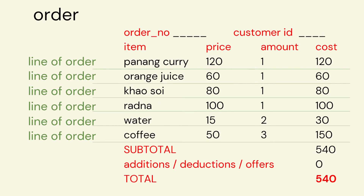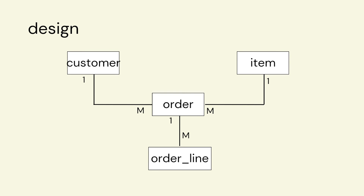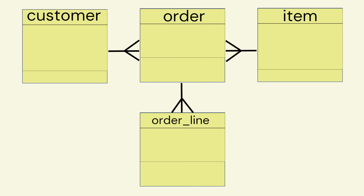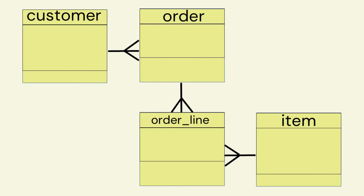We can see that each line of the order changes per order, so we can update our design to include another entity called order line. In the final, simple design, we have the entities customer and item. They make orders, and the order table includes the customer ID. The item ID goes into the order lines — the same as our receipt example — so each item is on a different order line, and that order line table is related to the order.